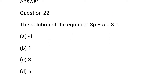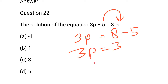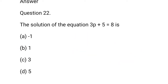Question 22: The solution of the equation 3p plus 5 is equal to 8. So, 5 goes to RHS and is subtracted. 3p is equal to 8 minus 5, that is 3. So, 3p equals 3, and p is equal to 3 upon 3, that is 1. b option is correct.